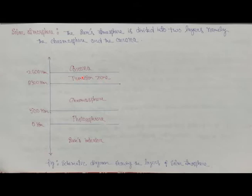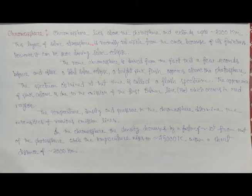Chromosphere lies above the photosphere and extends up to nearly 2000 kilometers. This layer of solar atmosphere is normally not visible from Earth because of its faintness. However, it can be seen during a total solar eclipse. The name chromosphere is derived from the fact that a few seconds before and after a total solar eclipse, a bright pink flash appears above the photosphere.